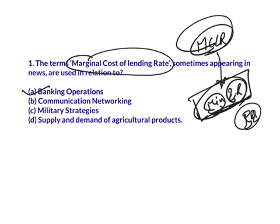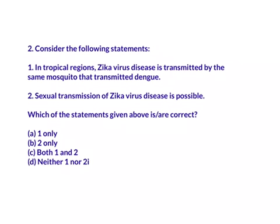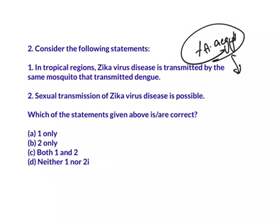The next question: Consider the following statements - in tropical regions, Zika virus disease is transmitted by the same mosquito that transmits dengue. That mosquito is the female Aedes aegypti mosquito, which is responsible for spreading dengue and chikungunya viruses. The next statement is that sexual transmission of Zika virus disease is possible - yes, Zika can be passed through sex from a person who has Zika virus to their partner. As both statements are correct, the answer is both 1 and 2, which is option C.